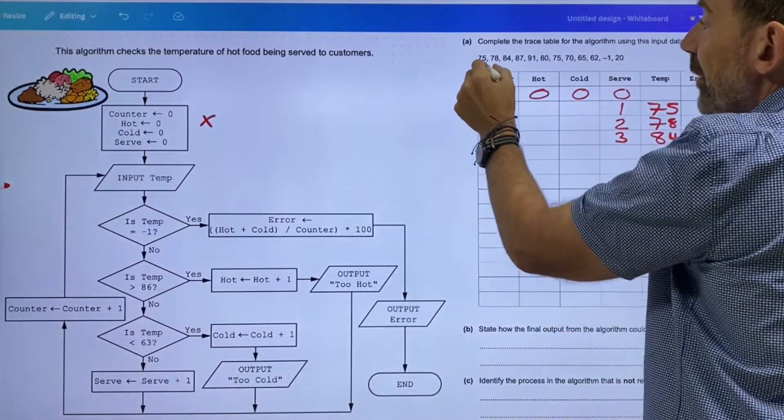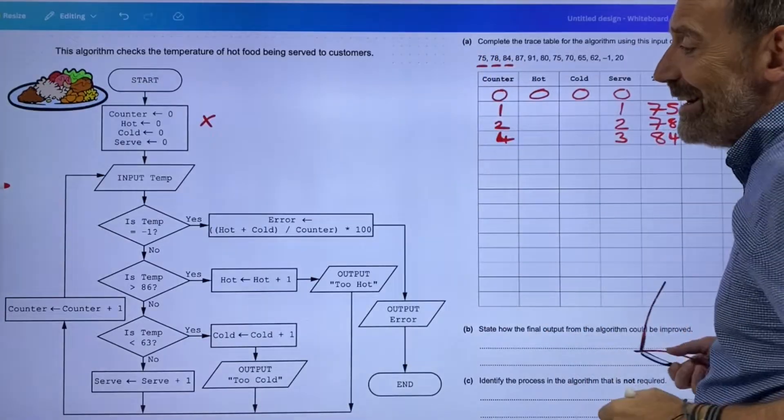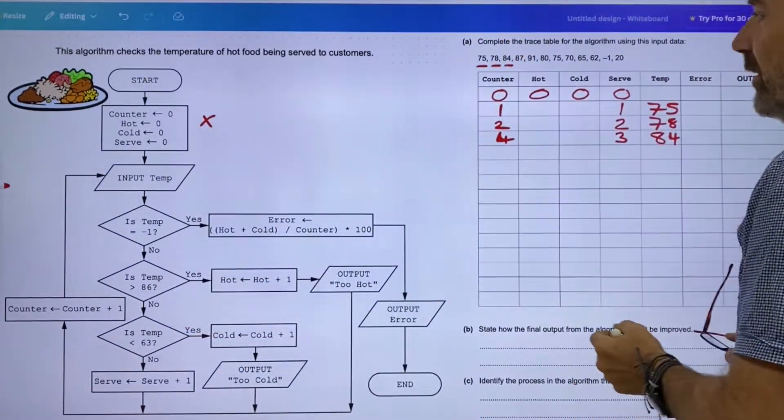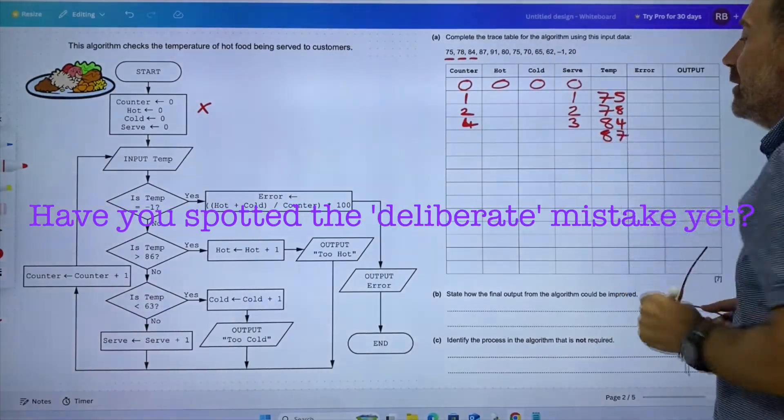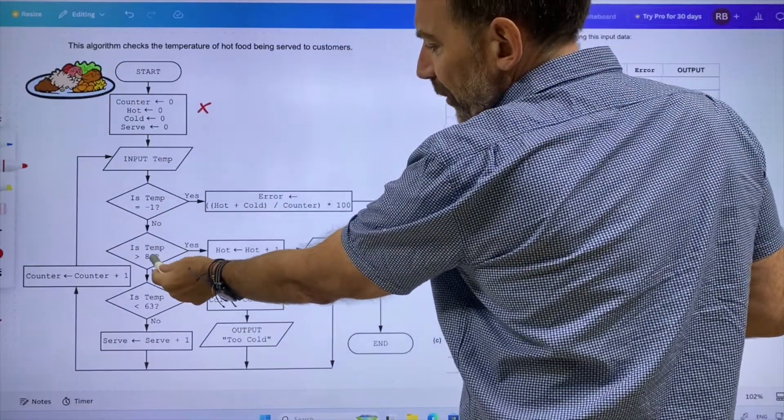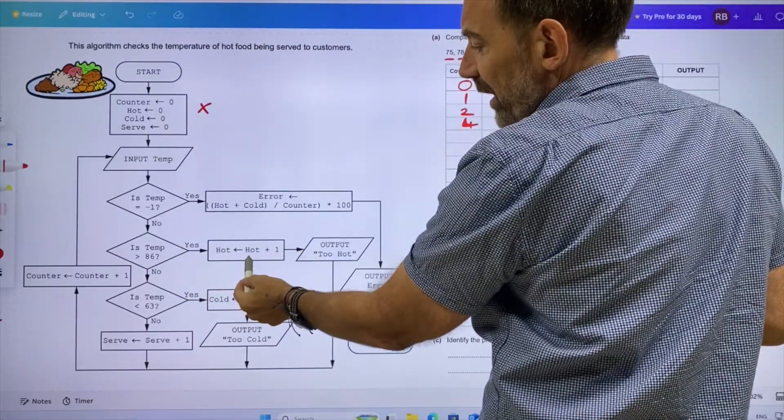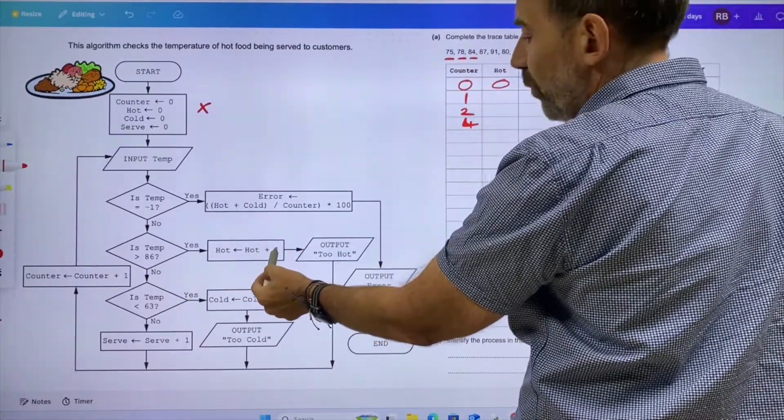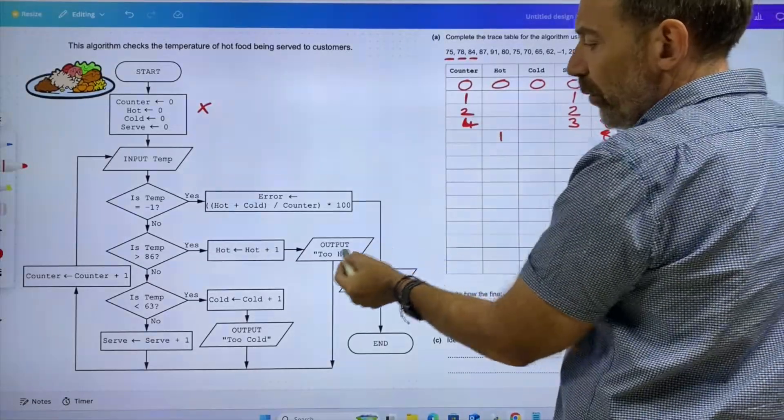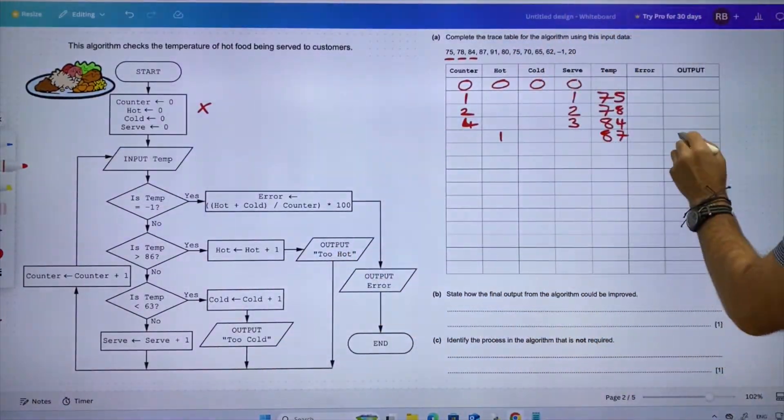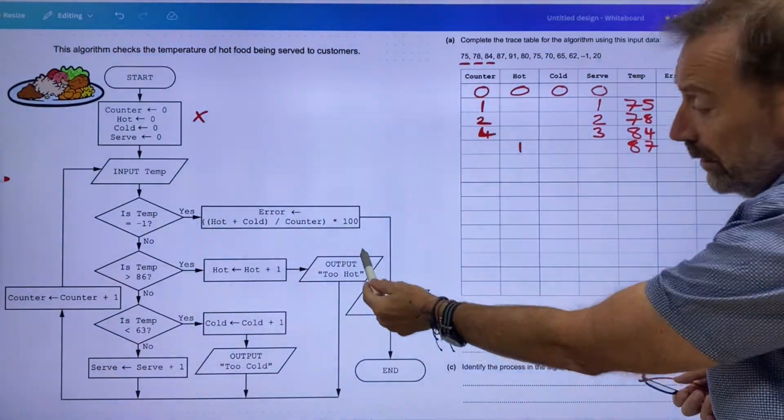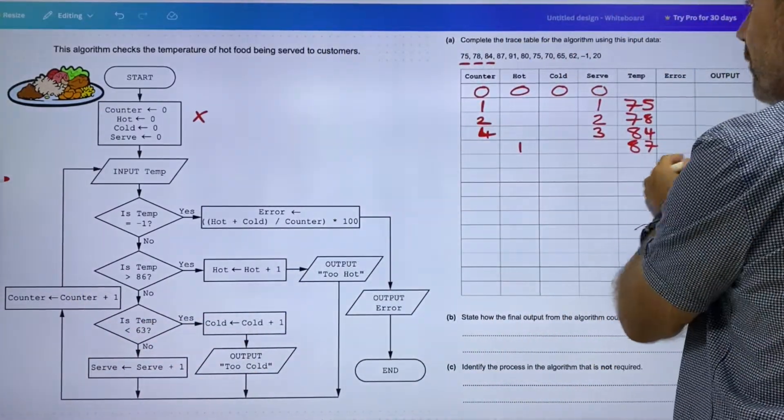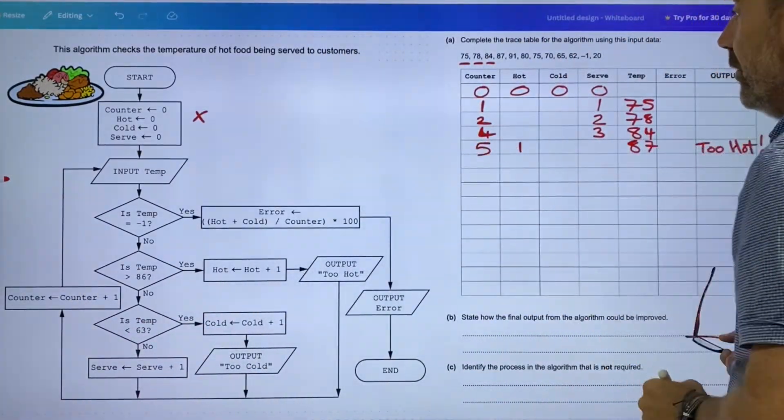84—is it minus one? No. Is it greater than 86? No. Is it less than 63? No. And so we're going to go round and round again. 87 now—that's greater than 86, so let's have a little look at that. Put the number 87.